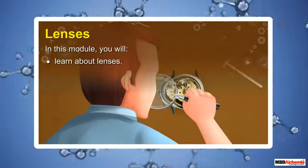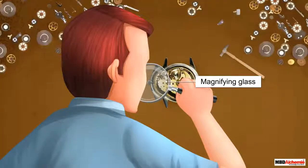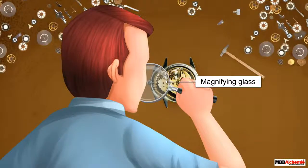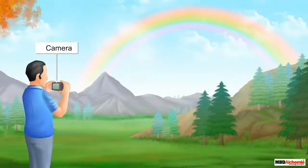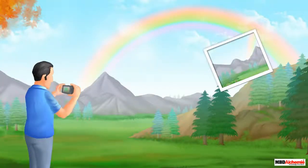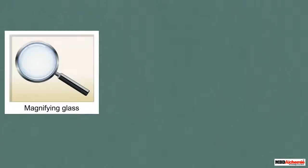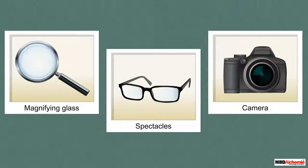In this module, you will learn about lenses. A magnifying glass is used to see very tiny objects. Spectacles are used by some people to correct defects in their vision. Cameras are used to click pictures and create beautiful memories. A magnifying glass, spectacles, and a camera all have one thing in common — do you know what it is?